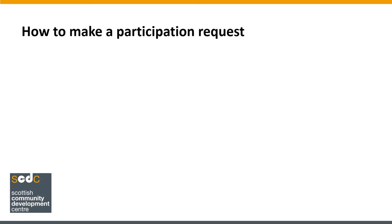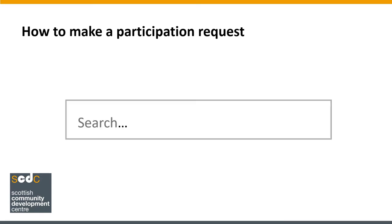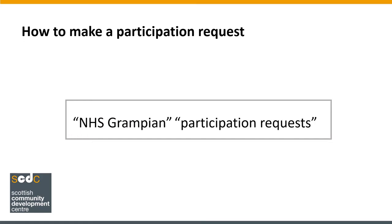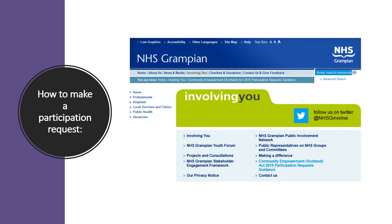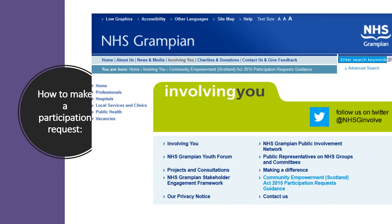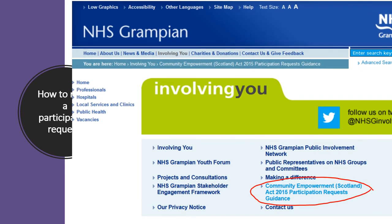Where do you get this form from? You'll probably have some idea of which Public Service Authority you want to make the participation request to. Let's imagine it's NHS Grampian. The first thing to do will be to find their information on participation requests, and one place to look for this is online. You could either type 'NHS Grampian and participation requests' into your favourite search engine, or you could look for the relevant page on their website. NHS Grampian's website has an 'Involving You' section, which has a link to more information on participation requests.